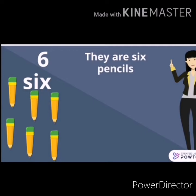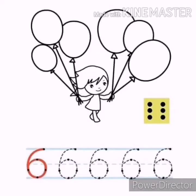What's this number? Number six. Let's count: one, two, three, four, five, six. They are six pencils. What's this number? Number six. How many balloons are there? Number six. Let's count: one, two, three, four, five, six. Let's count: one, two, three, four, five, six. They are six dots.